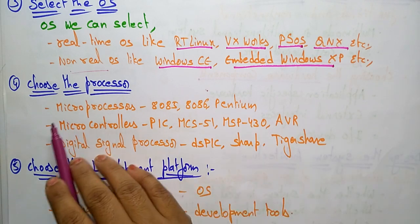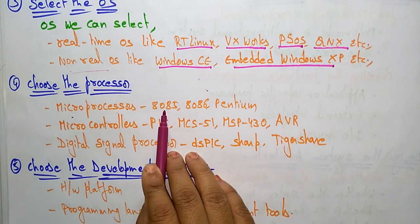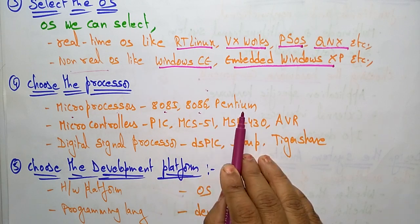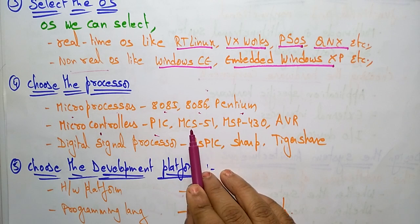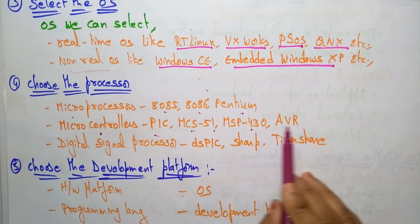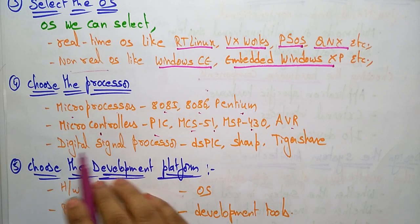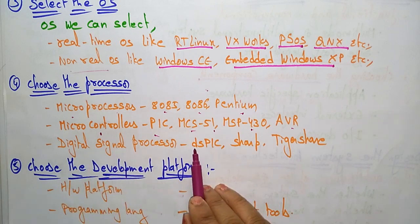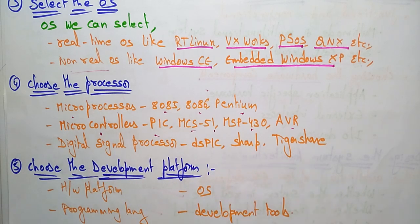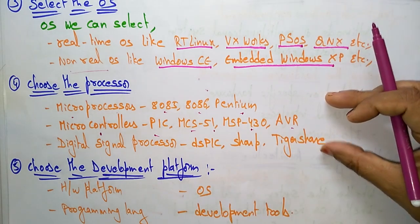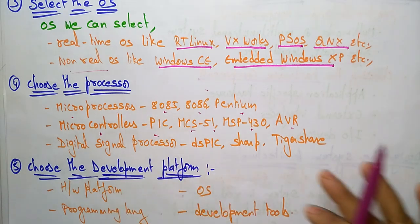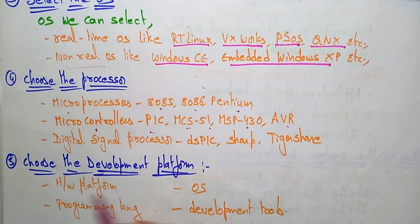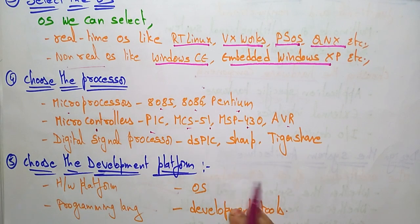The fourth step is to choose the processor. Microprocessors may include the 8085, 8086, or Pentium. If you choose a microcontroller, you can select PIC, MCS-51, MSP430, or AVR. If you are using a digital signal processor, you can select dsPIC, Sharp, or TigerSHARC. Based on your requirements and system performance, you can choose any one of these controllers.